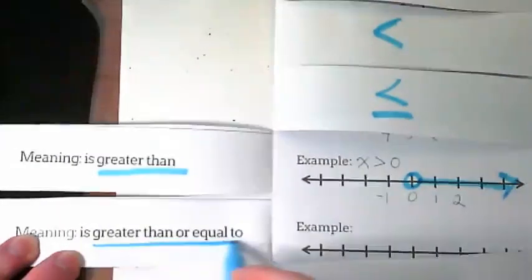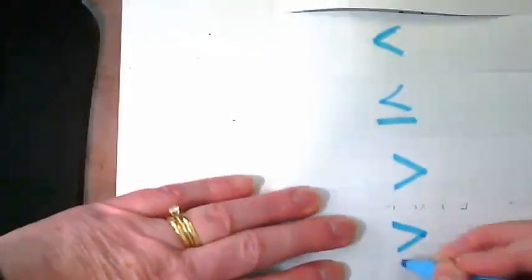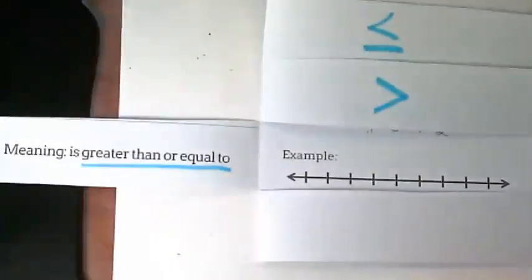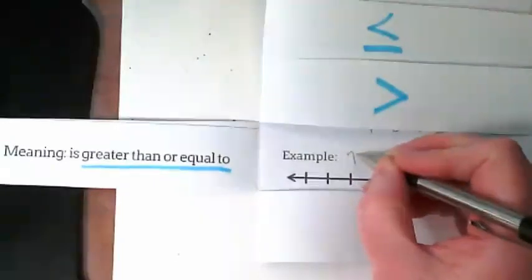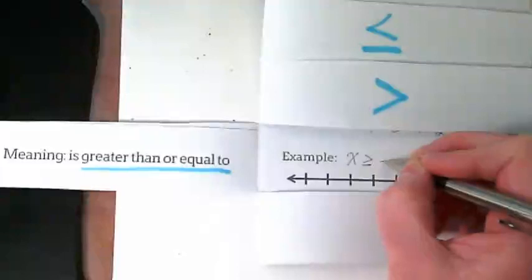The next one, the meaning is greater than or equal to. So what are we going to do with it? We're going to combine the greater than symbol and the equal symbol into a new symbol for greater than or equal to. I'm going to say for this one, our x is greater than or equal to negative 10.